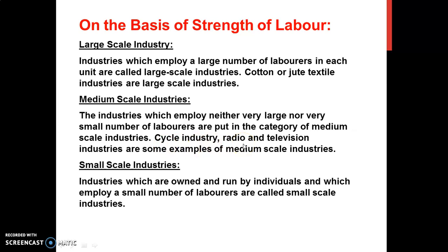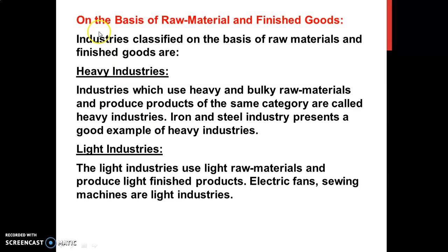Cycle industry and television industry are examples of medium scale industry. Small scale industries are those industries in which a small number of laborers or workers are employed. On the basis of raw material and finished goods, there are two types. Heavy industries are those in which heavy and bulky raw material are used to produce final products — for example, iron and steel industry. Light industries are those in which light raw material is used — for example, electric fans or cotton textile industry, because cotton wool as a raw material is very light in weight.